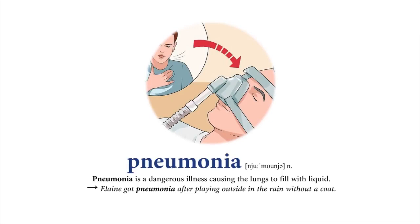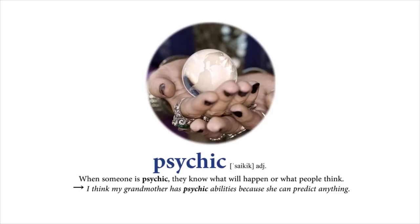Psychic: When someone is psychic, they know what will happen or what people think. I think my grandmother has psychic abilities because she can predict anything.